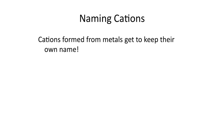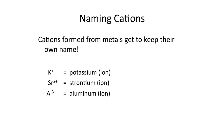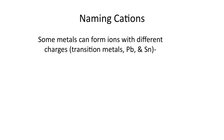First, let's talk about naming the cation. The cations that are formed from metals get to keep their own name. So the potassium ion with a charge of plus 1 is just called the potassium ion, strontium plus 2 would be the strontium ion, aluminum plus 3 would be the aluminum ion. There are a few cations that are a little bit more difficult to name, and that happens when you have an element that can form ions with different charges.